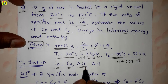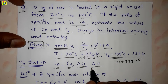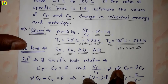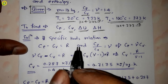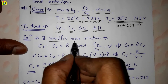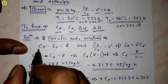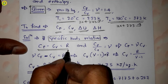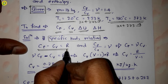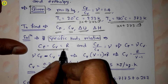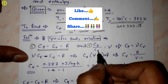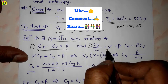We need to find cp, cv, delta U (change in internal energy), and delta H (change in enthalpy). We know two specific heat relations: the first is cp minus cv equals R, and the second is cp divided by cv equals gamma.